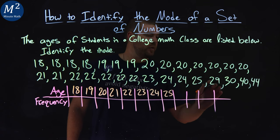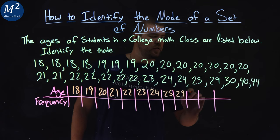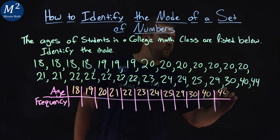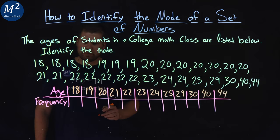24, 25. Then we go to 29, 30, 40, and 44. Forty-four-year-old in the math class. All right.